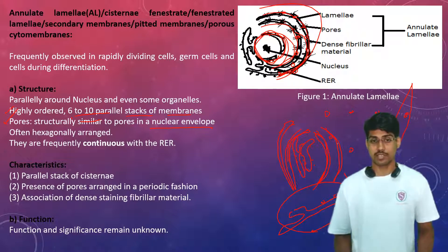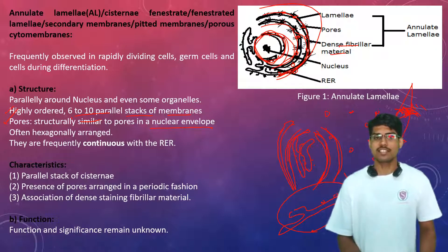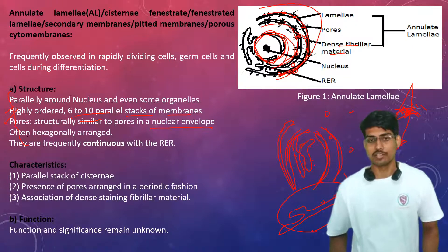They have also the dense fibrillar material. These are the dense fibrillar material inside their structure. They are found to be associated with this dense fibrillar network. These are some of the available structural points about these annulate lamellas.